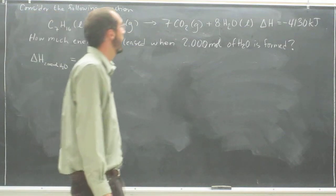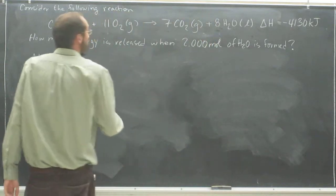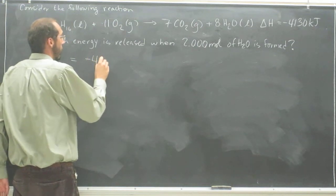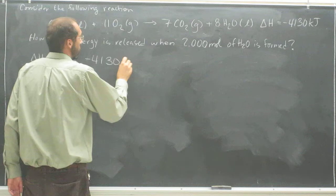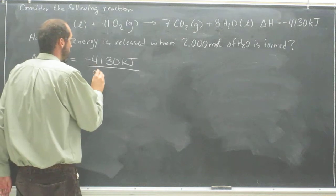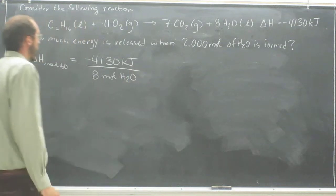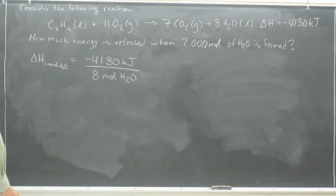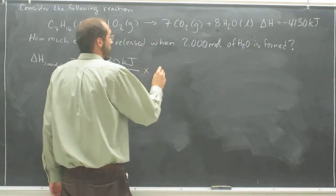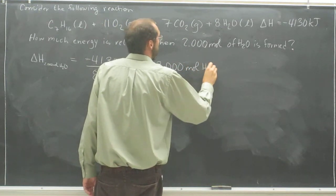Well, you know that for every 8 moles of H2O, you're going to have negative 4,130 kilojoules. So 4,130 kilojoules divided by 8 moles of H2O. We're concerned only about 2 moles of H2O. So you're just going to multiply that 2.000 moles of H2O.